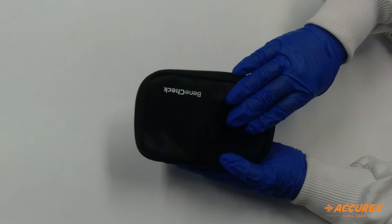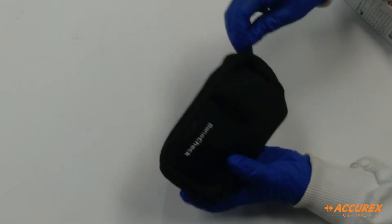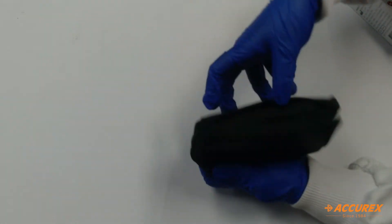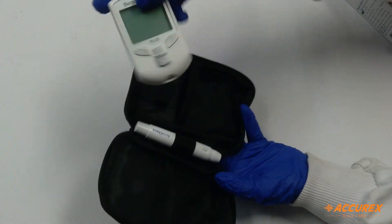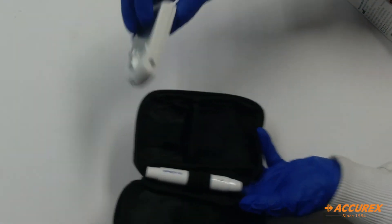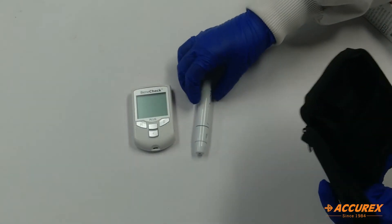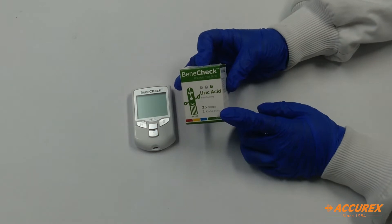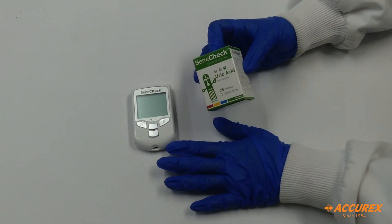So we will see now what is inside this black pouch. In this we have the BeneCheck meter and one lancing device. This is the BeneCheck strips. With the help of this strip you will test in this BeneCheck meter.